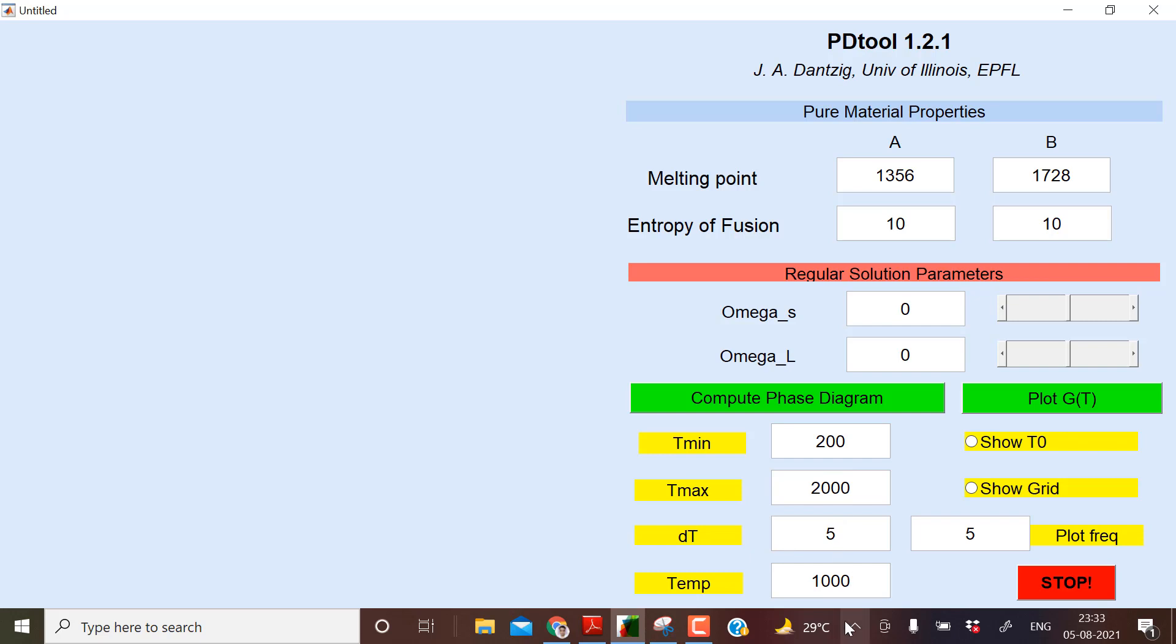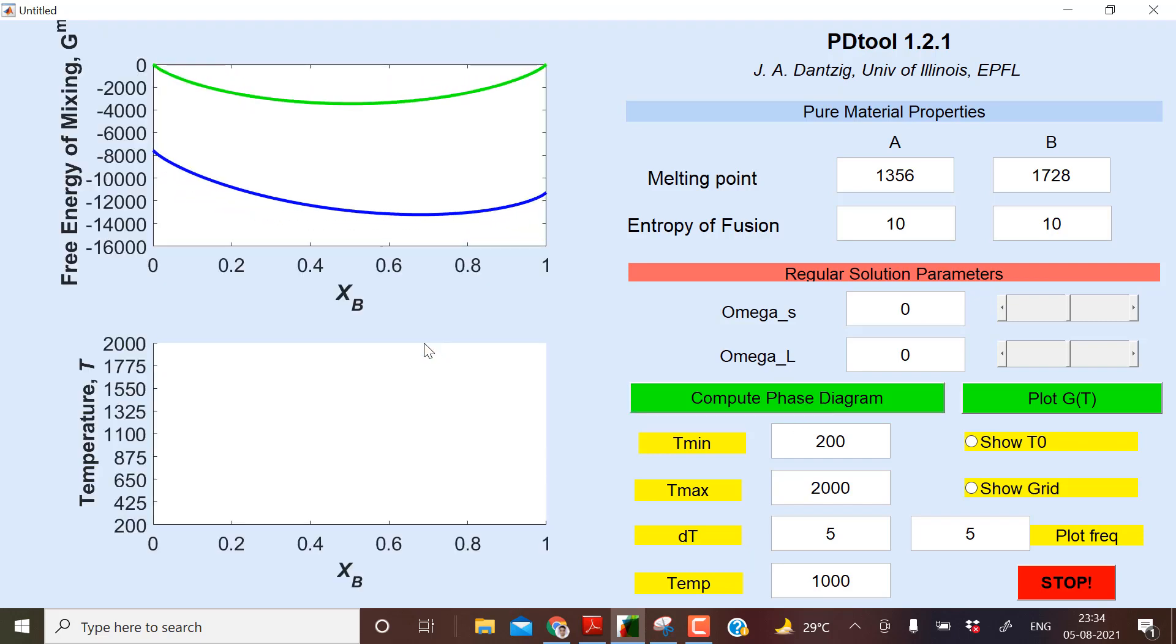And at what temperature you want this G versus T diagram? So let me decide right now, let it be at 1000. Now it is trying to calculate the phase diagram.